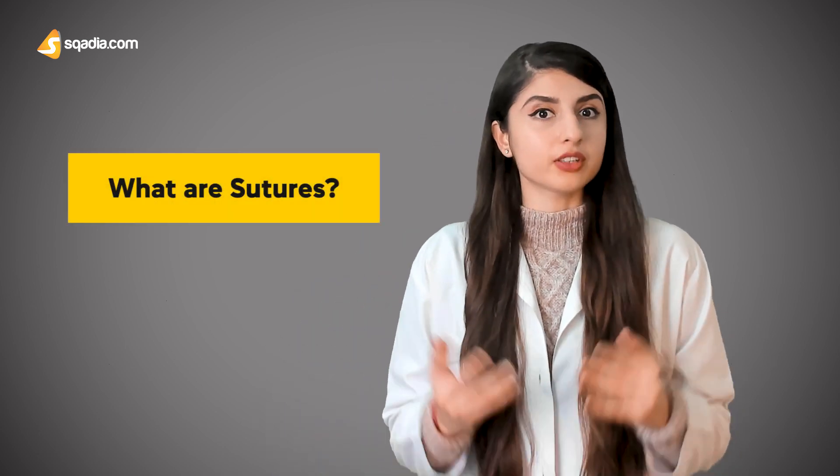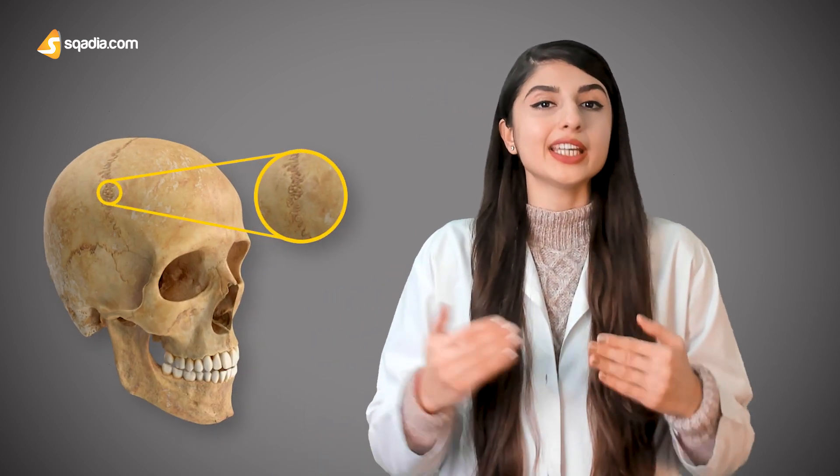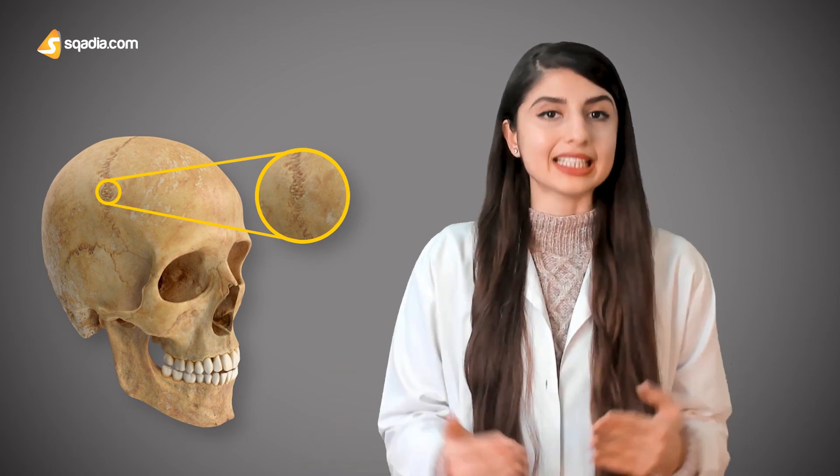Do you recall what sutures are? Sutures are immovable fibrous joints which are mainly present in our skull. Because of the location of this small bone, fractures of the lacrimal bones are not very common. But if the lacrimal bone is fractured, it can cause obstruction of the nasolacrimal duct, increasing the pressure in the duct and causing injuries to its walls. The increased pressure presents with watery and irritated eyes because the tears cannot drain normally.